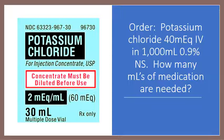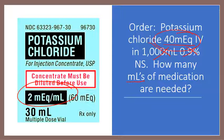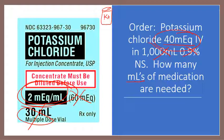This problem has a lot of distractions. The order is potassium chloride 40 MEQ IV in 1,000 mL of 0.9% normal saline — how many mL of medication is needed? The 1,000 mL and the IV solution are distractors. The label tells you the concentration — for example, 2 MEQ per 1 mL. The total bottle of 30 mL with 60 MEQ is also a distractor; we only need the concentration to pull the right amount.